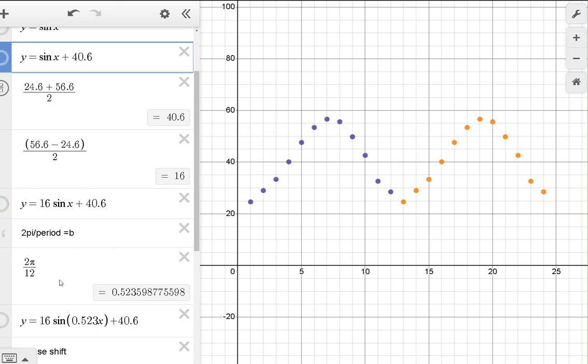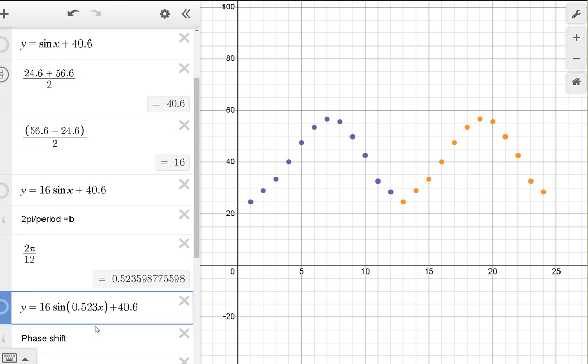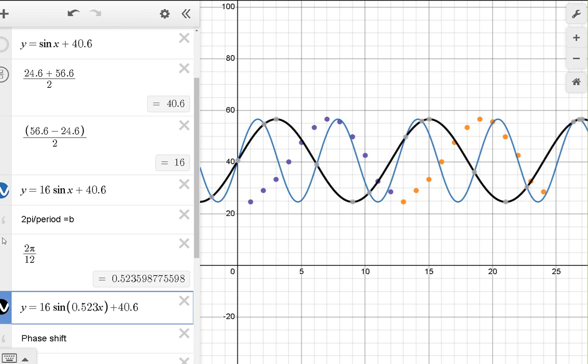In my case, I've got 12 equals 2 pi over B because this data is going to repeat itself every 12 months. So I can solve for B, and B is going to equal 2 pi over 12, or basically pi over 6. Let's add that in. And that's going to bring about an even better change. That's looking a lot, lot better, isn't it?